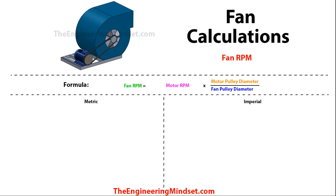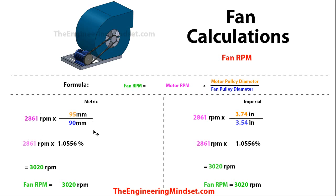We can also calculate the fan RPM needed to achieve our design criteria. The formula is: fan RPM = motor RPM × (motor pulley diameter ÷ fan pulley diameter). We already know these figures from the manufacturer or design data. Doing the division of the pulley diameters gives a ratio, and multiplying out brings us to 3020 RPM — the speed the fan needs to rotate at to achieve the design flow rate.